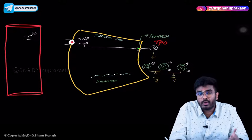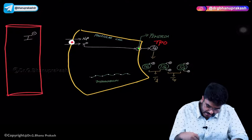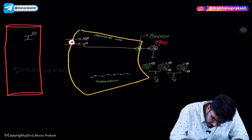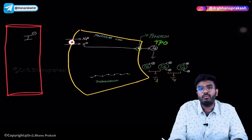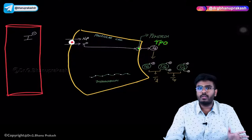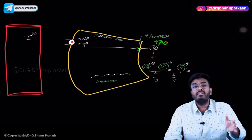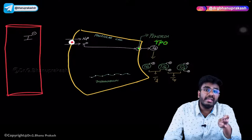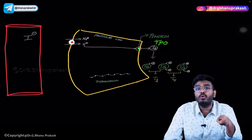Thyroid peroxidase is a very important enzyme present on the colloid side. It converts iodides into iodine. Now we have iodine.